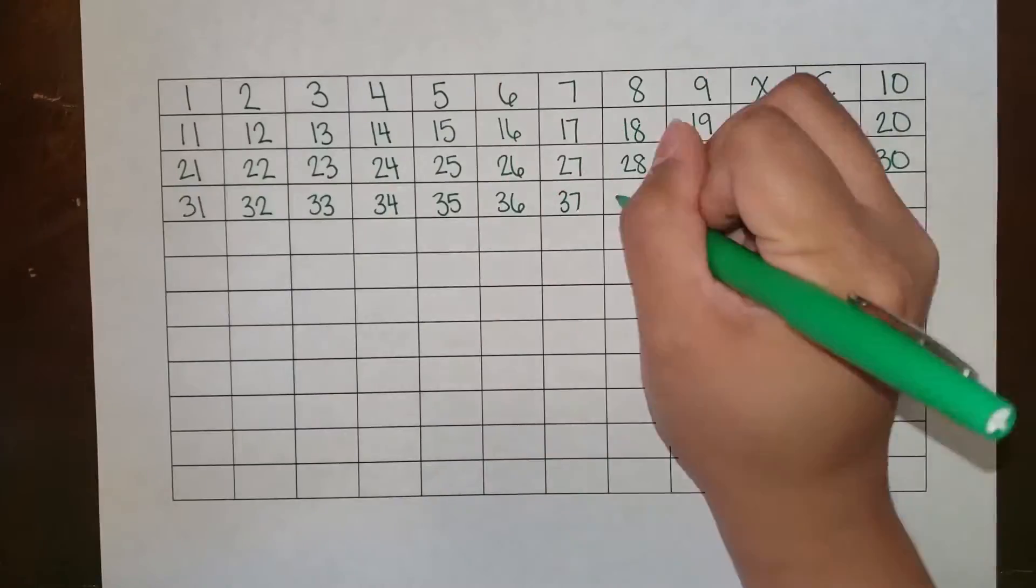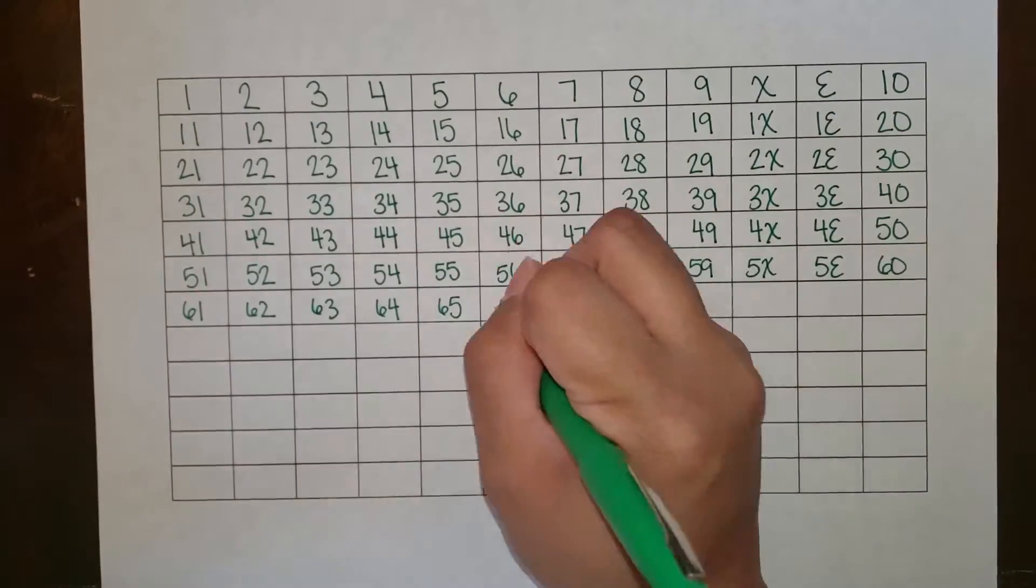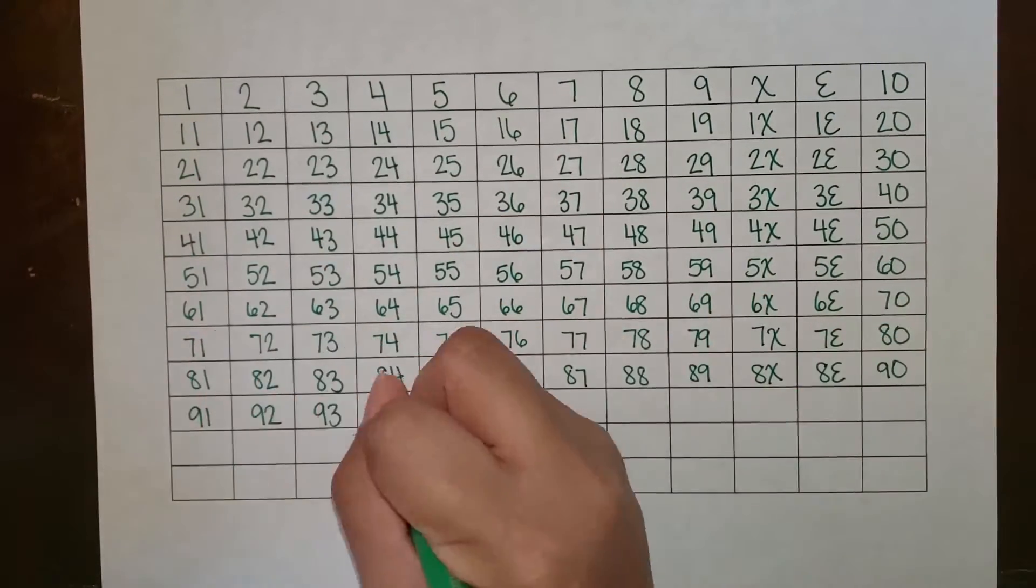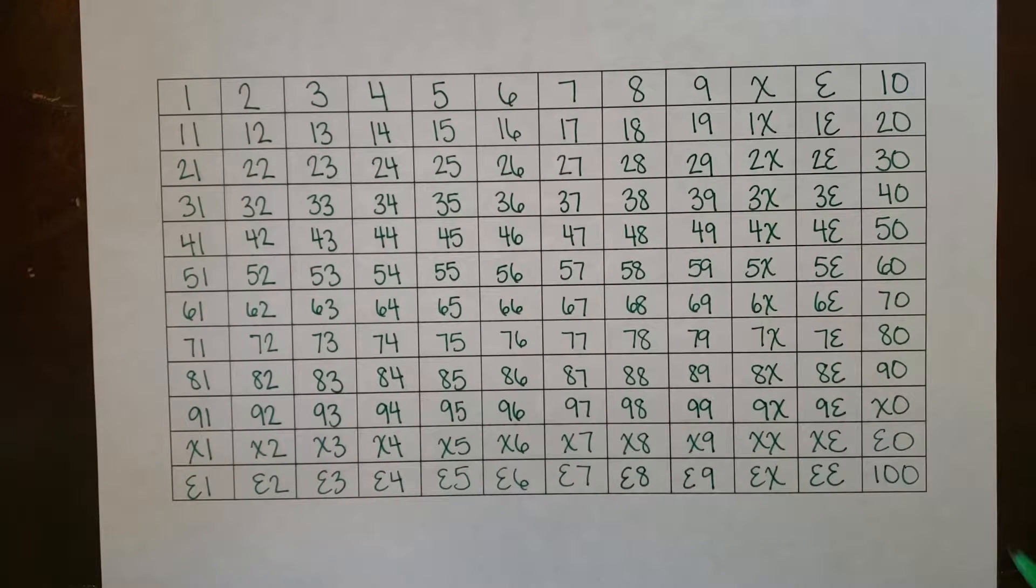I wanted to make a video showing many of the interesting patterns that arise in dozenal. So now you're seeing the numbers written out from 1 to gross, and I want to use this to look at a few different patterns in both primes and squares.